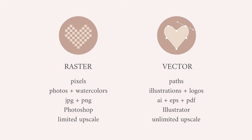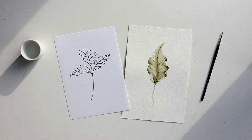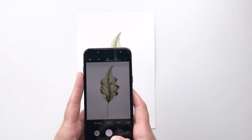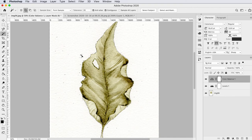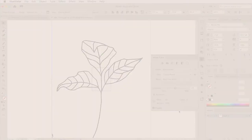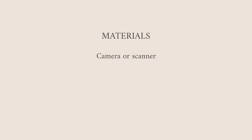Next I will show you two different ways to digitize your artwork with these two examples. First I will show you how to photograph or scan your artwork and then I'm going to rasterize the watercolor leaf and remove the background in Photoshop, and for the leaf illustration I'm going to vectorize it in Illustrator. For this class you will need a camera or a scanner and you will need a computer and Photoshop and Illustrator from Adobe.